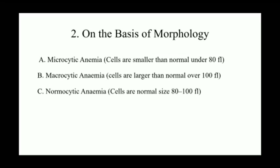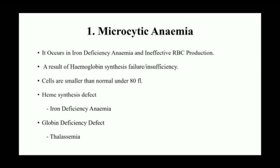On the basis of morphology: microcytic anemia mein cells smaller than normal hoti hain, under 80 fL. Macrocytic anemia mein cells larger than normal hoti hain, over 100 fL. Normocytic anemia mein cell ka size 80 to 100 fL rehta hai — normal range mein. Pehle microcytic anemia dekhte hain.